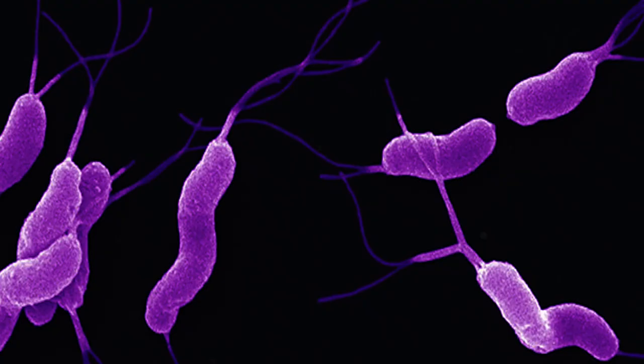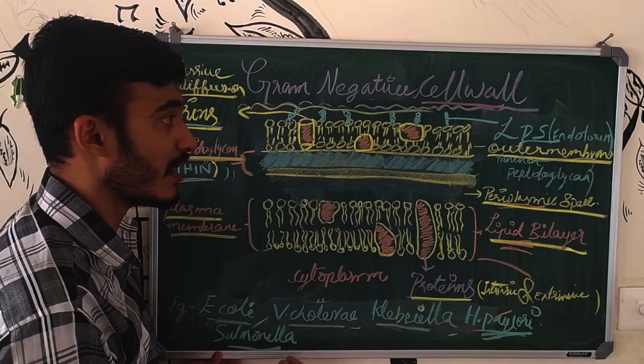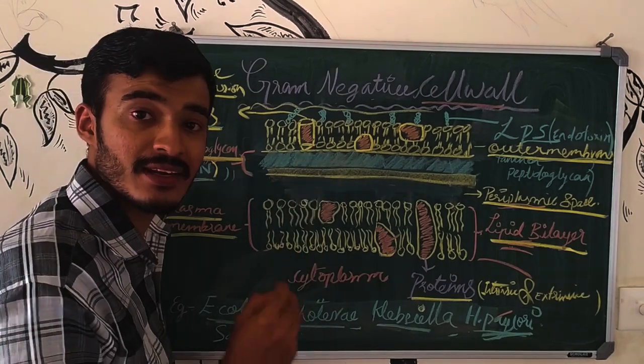Helicobacter pylori — that is one example. This is why I use Salmonella typhi and Salmonella to organize the gram-negative examples.